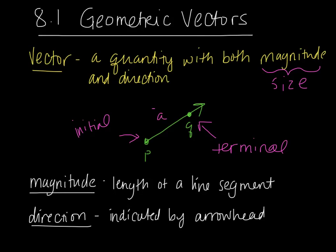A vector might be named with a single letter — you would name this vector A with a half arrow on top, not a full arrow because a full arrow would indicate a ray. Or you would name it by its points PQ with a ray on top as well. Magnitude is the length of a line segment. To denote magnitude of a vector, you write it with an absolute value sign around it. The direction is indicated by the arrowhead, which shows which direction your vector is traveling in.